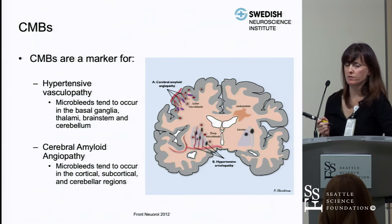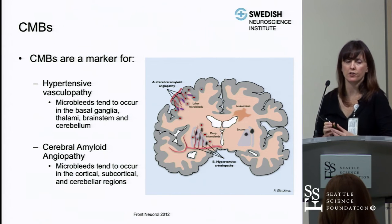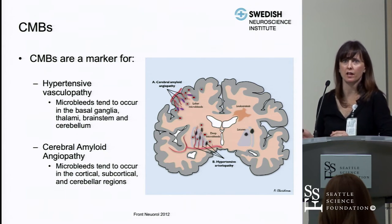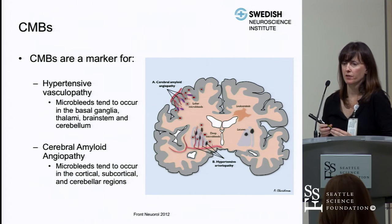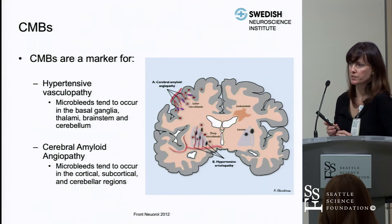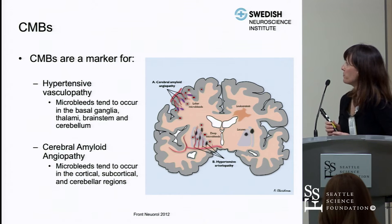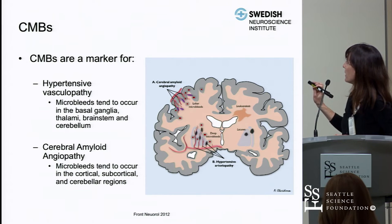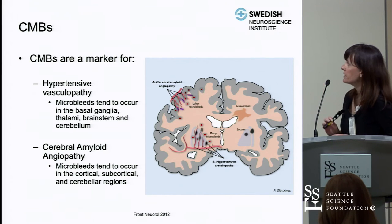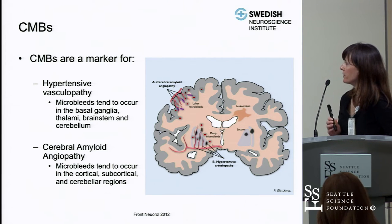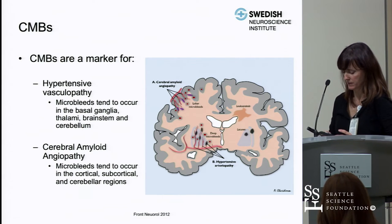Cerebral microbleeds are markers for hypertensive vasculopathy and cerebral amyloid angiopathy. From a stroke standpoint, location matters. Hypertensive vasculopathy microbleeds tend to occur in the basal ganglia, thalami, brainstem, and cerebellum, whereas cerebral amyloid angiopathy microbleeds tend to occur in cortical, subcortical, and cerebellar regions.